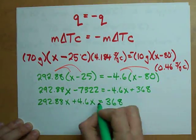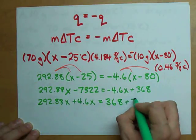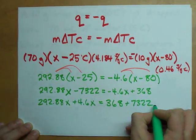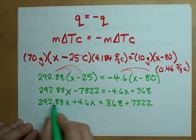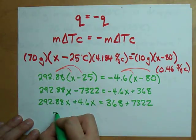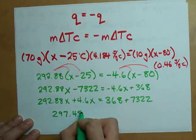I got my 368 on the right-hand side still, and I'm moving the 7322 over. I can collect my like terms. This plus this gives me 297.48.